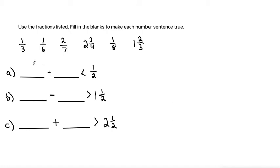Part A is asking us to add two fractions together to be less than 1/2. If we need to add two fractions to be less than 1/2, that means we need to add two small fractions. A general rule of thumb is that if the number on top is small and the number on bottom is big, that would equal a small fraction.